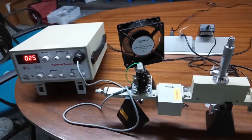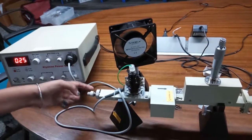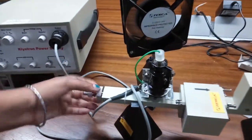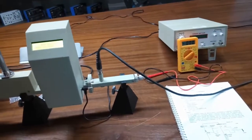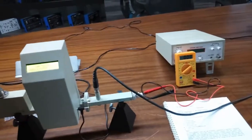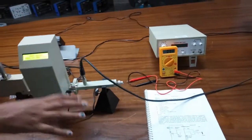We can use this klystron mount here and the detector mount here to get the maximum voltage in the output waveform. Keep the output waveform voltage around 200.